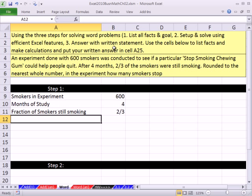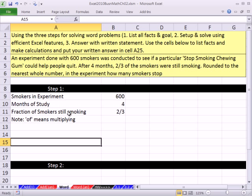Now I'm going to read this very carefully. 2/3 of the smokers were still smoking. If we go back to our list of words, we can remember that 'of' means what operator? It means multiplying. So I'm going to put a little note here: Note - 'of' means multiplying. I put a semicolon there, I meant colon.